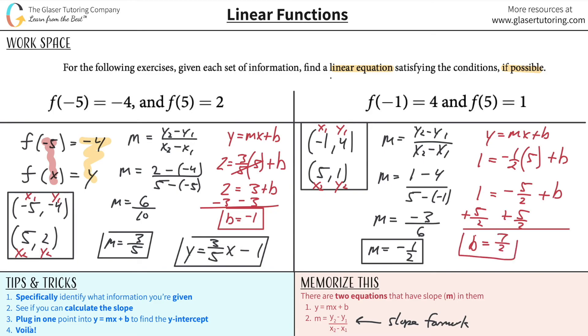Now lo and behold, we have our m and we have our b. So now the formula will be y is equal to negative 1 half x plus 7 halves. Or negative 0.5 x plus 3.5. Doesn't matter.